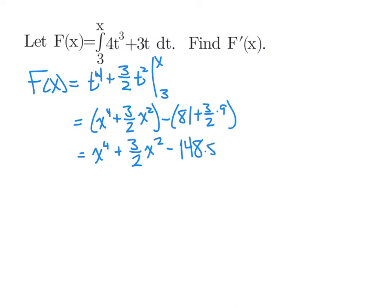Finally, we simplify this, and we'll have x to the fourth plus 3 halves x squared minus 148.5. Now, we weren't asked to find out what F is. We were asked to find out what F prime is.